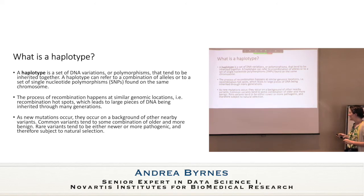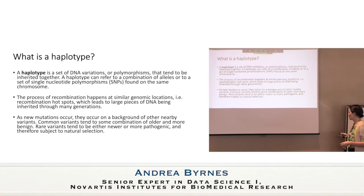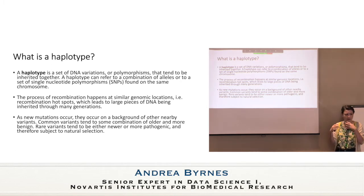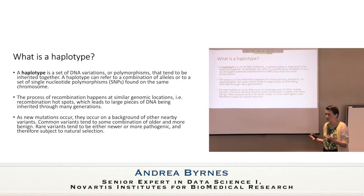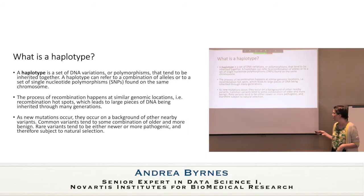This sets us up to talk about haplotypes. A haplotype is a set of DNA variations or polymorphisms that tend to be inherited together. It can refer to a combination of alleles or a set of SNPs found on the same chromosome, usually right in a row. Because recombination happens at similar genetic locations — with certain regions more or less likely to have recombination — large pieces of DNA get inherited through many generations, and all variations accumulated on that segment are inherited together. Common variants tend to be older and more benign; rarer variants tend to be newer or more pathogenic, subject to natural selection.